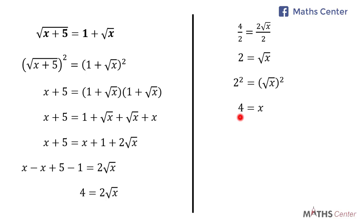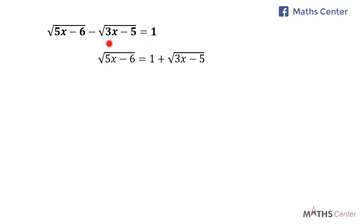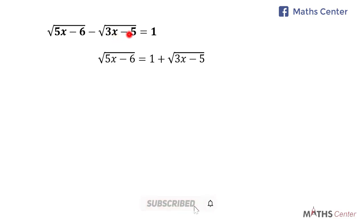Let's look at the second equation: the square root of 5x minus 6, minus the square root of 3x minus 5, is equal to 1. I'll begin by sending the square root of 3x minus 5 to the right hand side. When I do that I have the square root of 5x minus 6 equals 1 plus the square root of 3x minus 5.